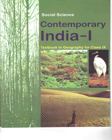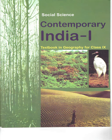The Northern Plain has been formed by the interplay of the three major river systems, namely the Indus, the Ganga and the Brahmaputra, along with their tributaries. This plain is formed of alluvial soil. The deposition of alluvium in the vast basin lying at the foothills of the Himalayas over millions of years formed the fertile plain. It spreads over an area of 7 lakh sq km, the plain being about 2,400 km long and 240 to 320 km broad. It is a densely populated physiographic division, with rich soil cover combined with adequate water supply and favourable climate. It is an agriculturally productive part of India.